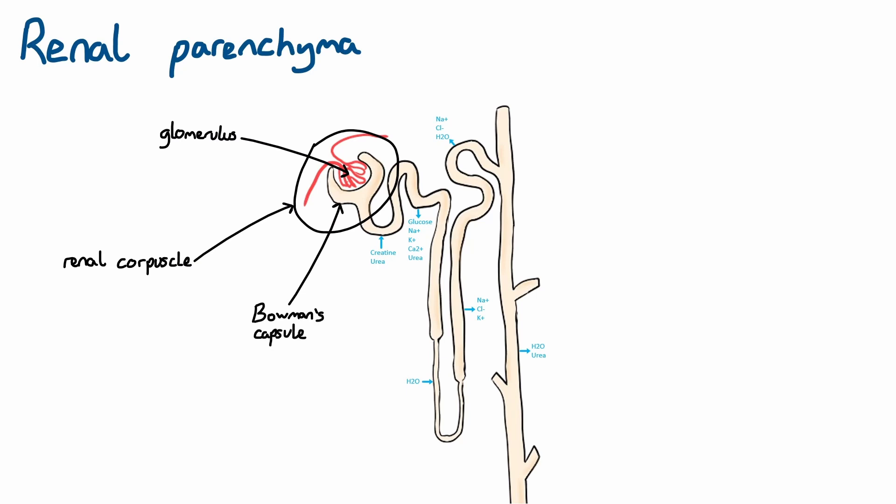From here, the filtrate travels down the proximal convoluted tubule, the loop of Henle, and the distal convoluted tubule. Throughout these sections of the nephron, the contents of the filtrate is being altered through reabsorption and secretion of various molecules the kidney is trying to hold onto or remove from the body.